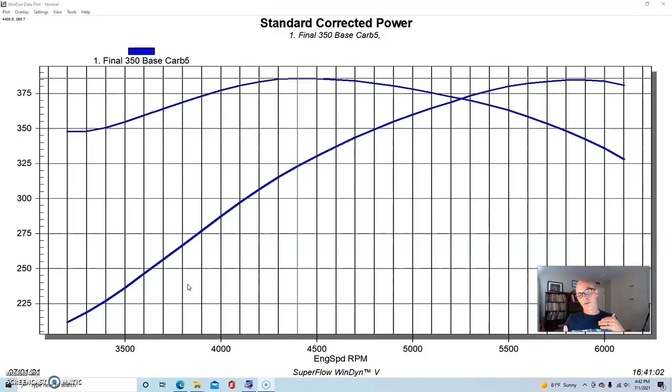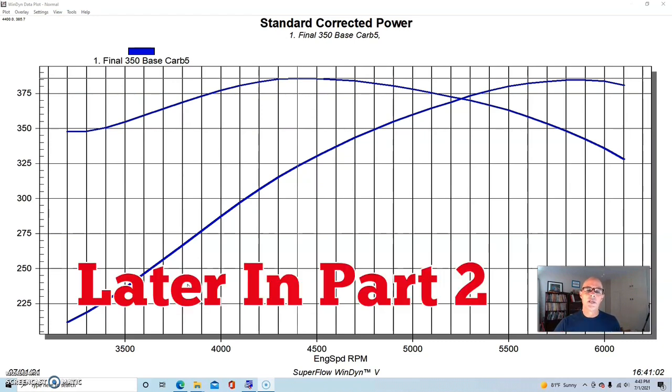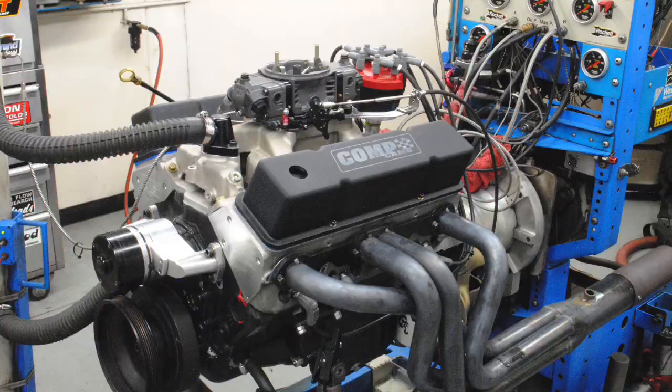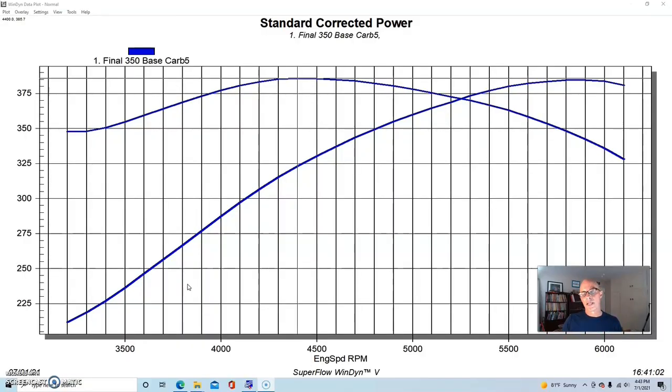To illustrate how well these individual runner downdraft stack injections work, we'll run one first on a small block 350 Chevy and then also on a small block Ford. Starting with the 350, this was basically a used junkyard crate motor, at least the short block portion of it.